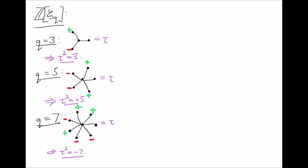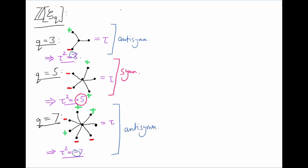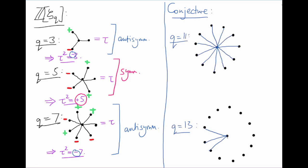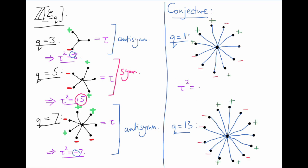Notice that when q is 5, we get a symmetric distribution of signs and we end up on the real axis — in other words, tau squared is positive. When q is 3 or 7, we get an anti-symmetric distribution of signs. We end up on the imaginary axis, so tau squared is negative. What about the next primes, say 11 or 13? We could conjecture that this pattern will continue to hold: give the n-th root of unity a plus or minus sign according to whether n is a square or not, and you should get values of tau that square to minus 11 and plus 13.